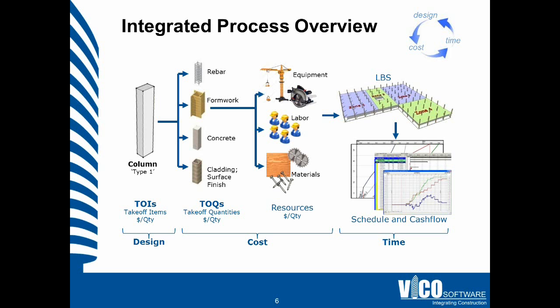The beauty of building information models is that each of the elements contributing to the quantities has a location — an X, Y, and Z coordinate — and we use that information to define a LBS, location breakdown structure. Using that, we know how many columns there are in zone 1, zone 2, zone 3, zone 4, and so on. The locations can be defined as granular as needed from a scheduling point of view. That integrated information — quantities per location with their cost — can then be fed into a schedule, which can also be used to print a cash flow curve, as you can see here. All of that is integrated and derived directly from the 5D data set.